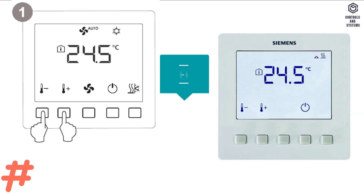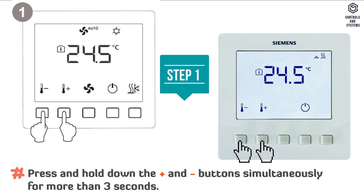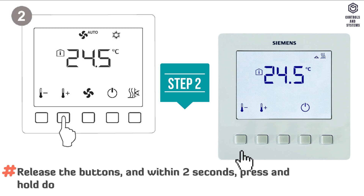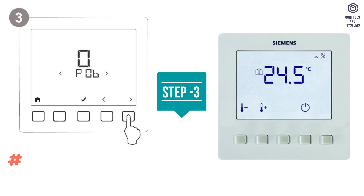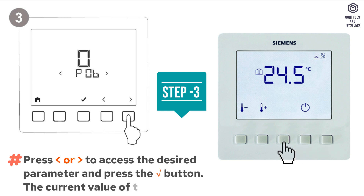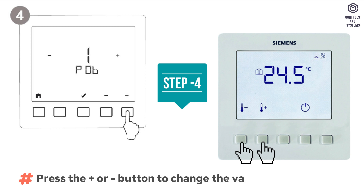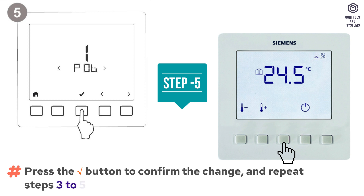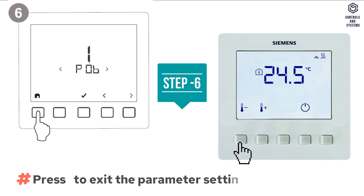Parameter settings: Step 1 — press and hold the plus and minus buttons simultaneously for more than 3 seconds. Step 2 — release the buttons, and within 2 seconds press and hold the plus button for 3 seconds; P01 is displayed. Step 3 — press the left or right arrow to access the desired parameter and press the tick button; the current value of the selected parameter is displayed. Step 4 — press the plus or minus button to change the value. Step 5 — press the tick button to confirm the change, and repeat steps 3 to 5 to change more parameters. Step 6 — press the home button to exit the parameter setting mode.